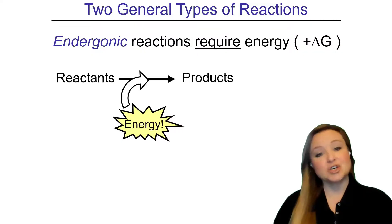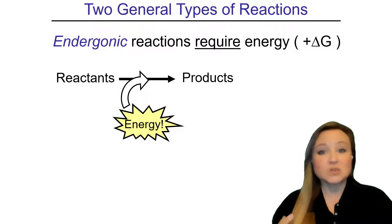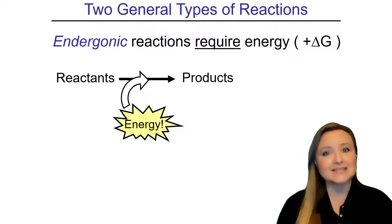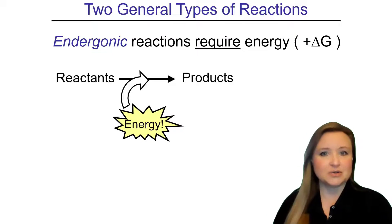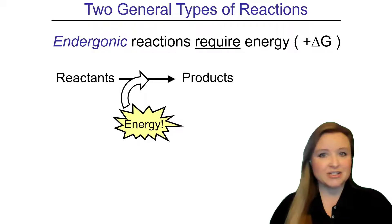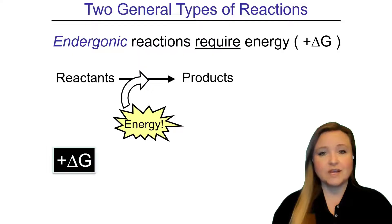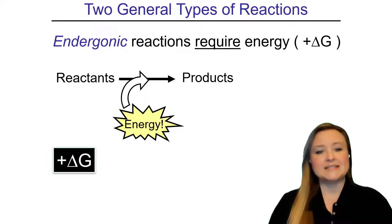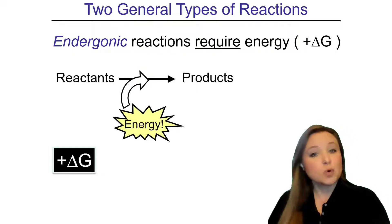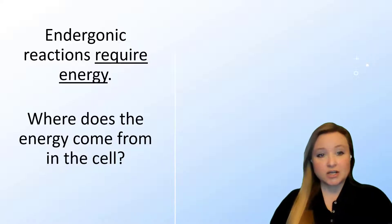On the other hand, endergonic reactions require energy in order to proceed. The reactants will not react with each other unless there's an input of energy into the reaction, and then they will react with each other to form products. Because endergonic reactions require energy, their change in free energy — delta G — is positive. A positive delta G means that there's more energy in the products than there is in the reactants.